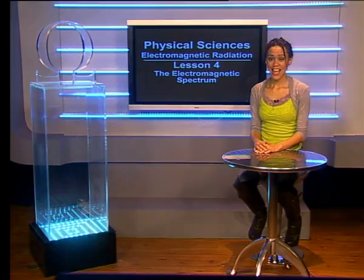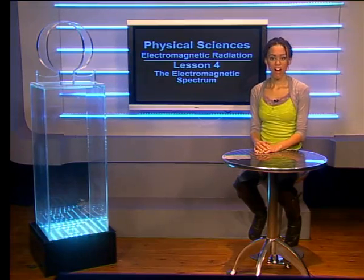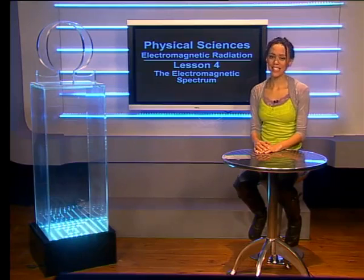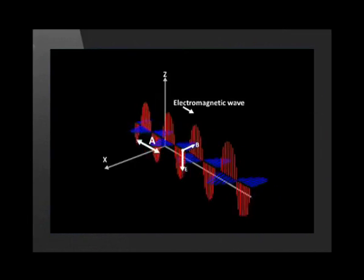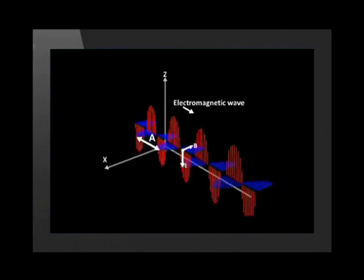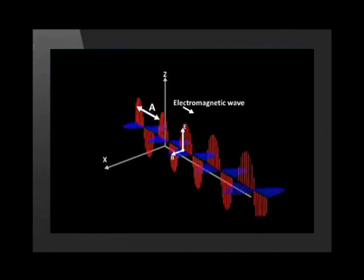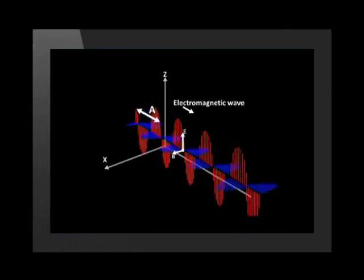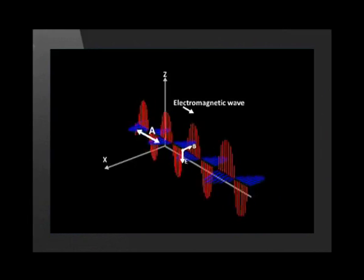Hello grade 10s. In this lesson, we look at the electromagnetic spectrum. This spectrum is a list of all the frequencies at which electrons can oscillate, and all the wavelengths of the waves that they emit. You'll remember from lesson 3 that when an electron oscillates, it generates an electromagnetic wave that radiates away from the electron.